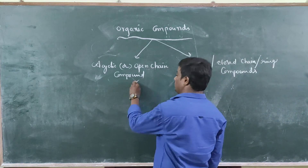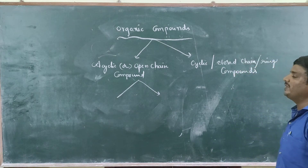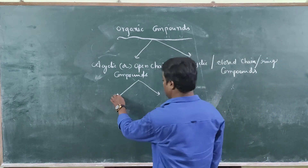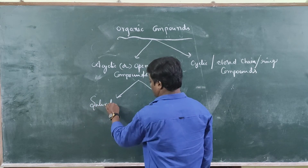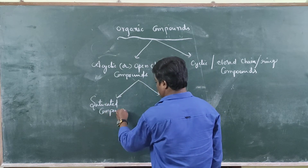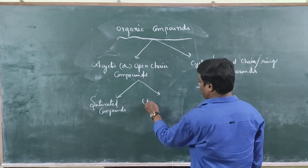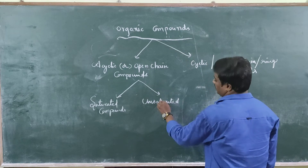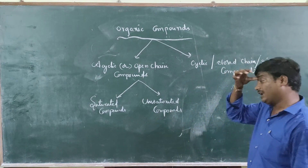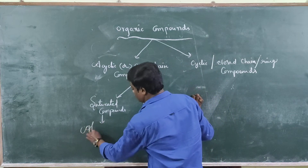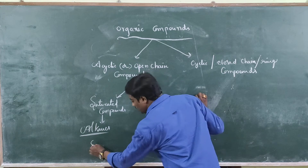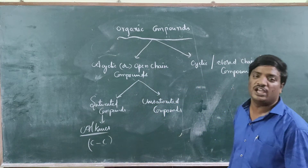Organic compounds can also be divided into saturated and unsaturated compounds. Saturated compounds belong to the alkane category, which have only single bond connections between carbon and carbon.